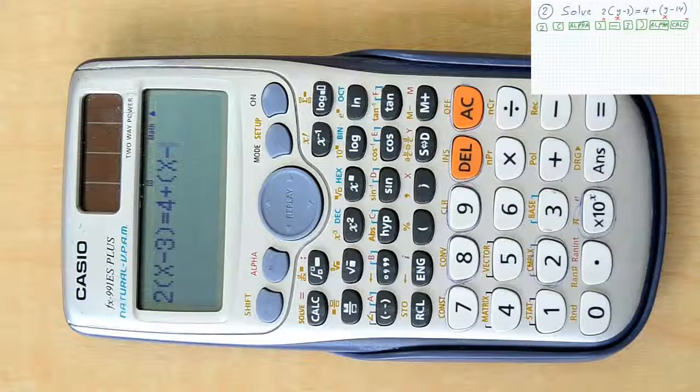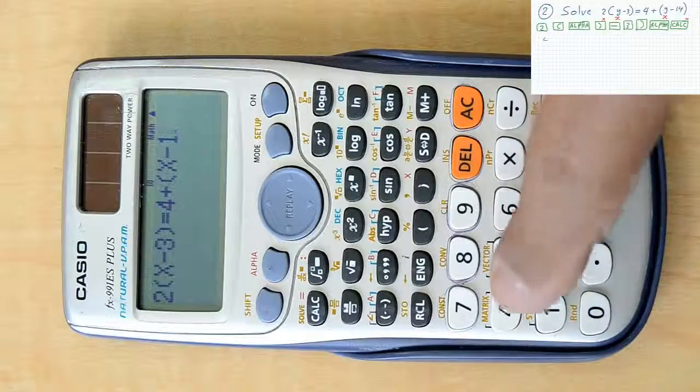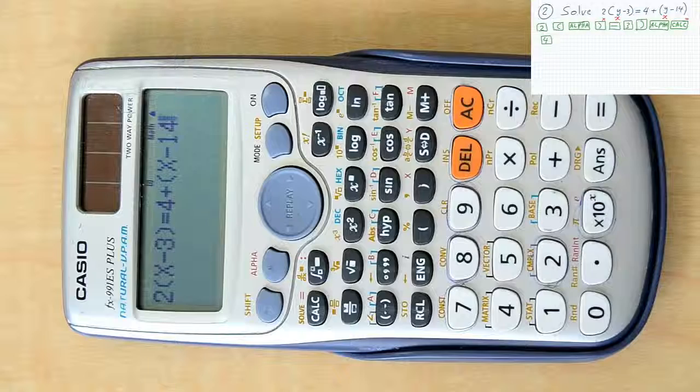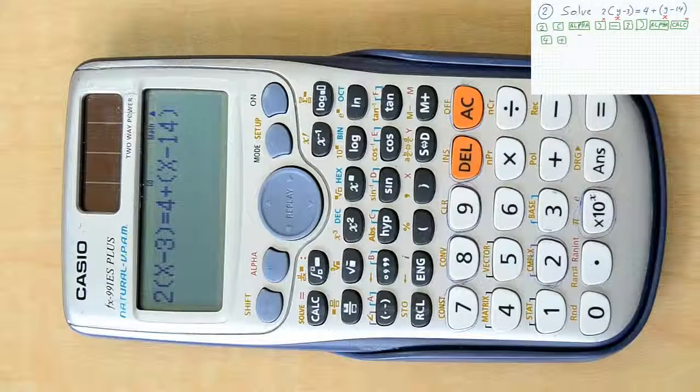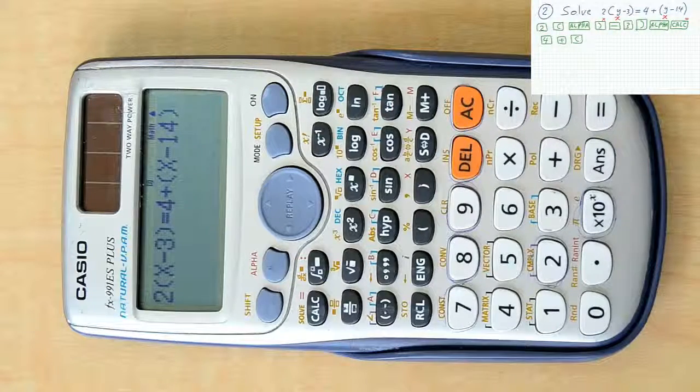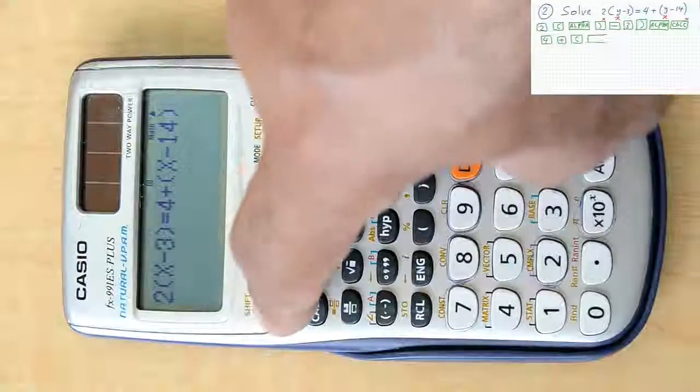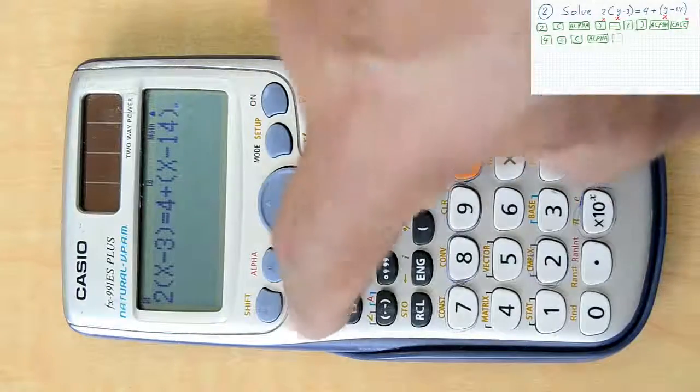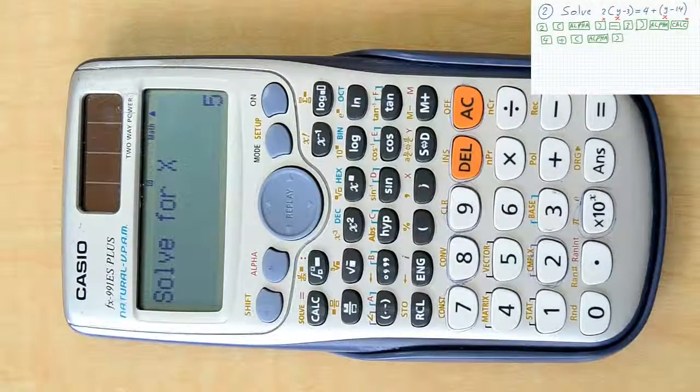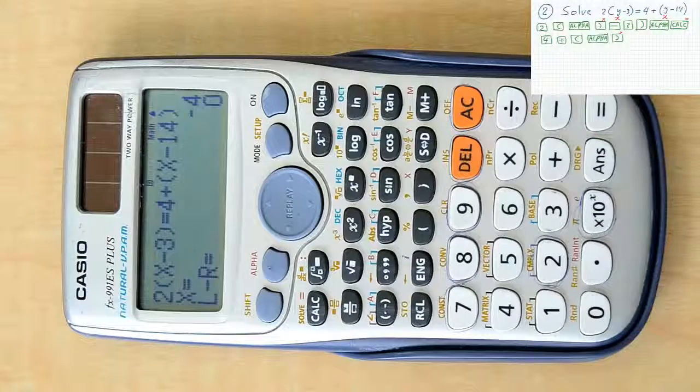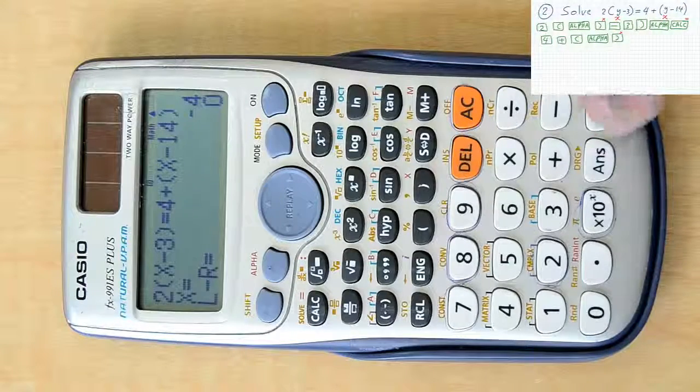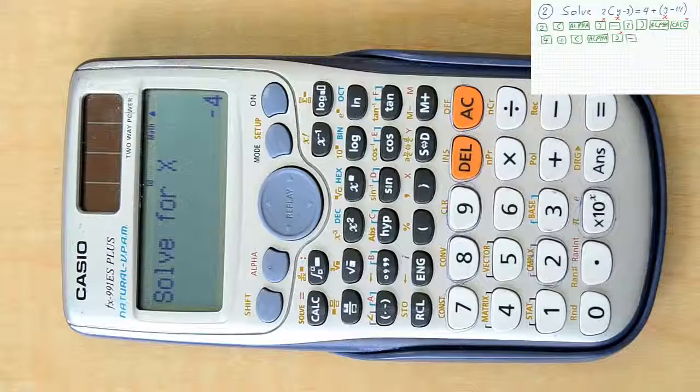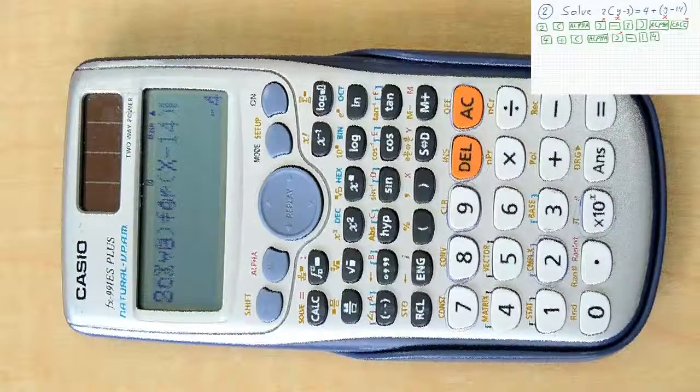Next step, complete your formula. Pressing 4, then plus, and then opening a new parenthesis. And again, alpha and the closing parenthesis to choose x which is on the top of it. Then pressing minus 1 closing parenthesis.